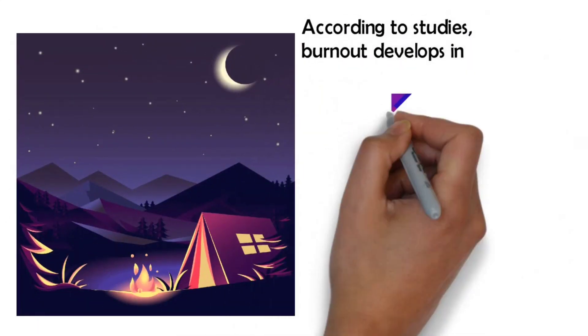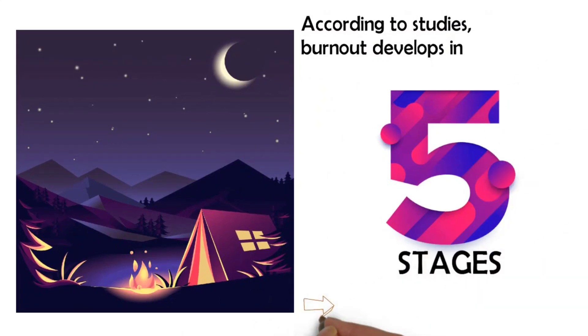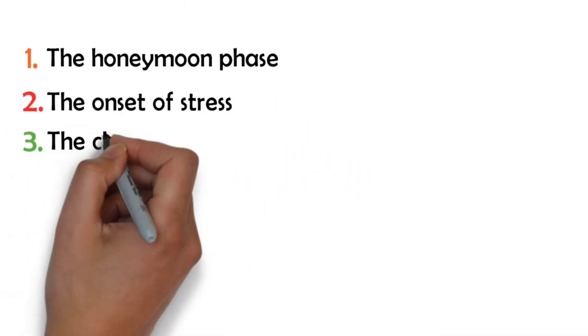Studies show that there are actually five major stages of burnout, each with increasing degrees of severity: the honeymoon phase, the onset of stress, chronic stress, burnout, and habitual burnout.